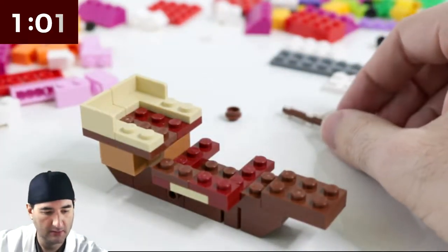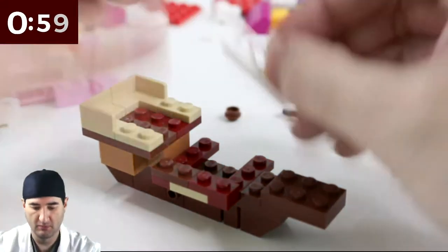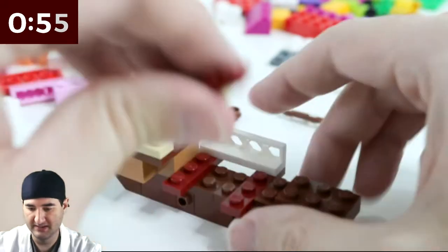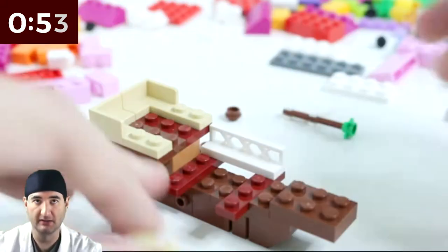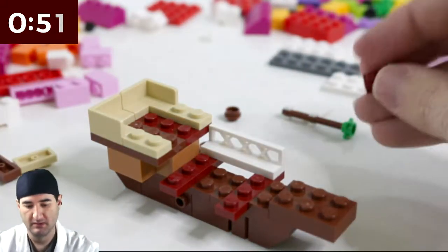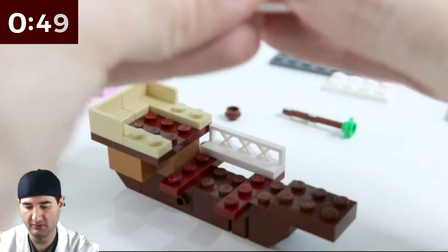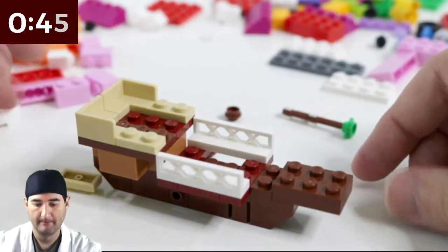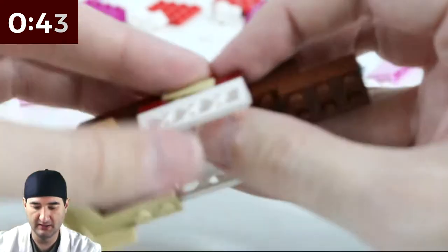And then, maybe a railing. Maybe that's it. Maybe we put the railing on like that. I think that's a little too bulky for what I'm looking for. Let's see what it looks like. That's not too bad. I actually kind of like it that way.